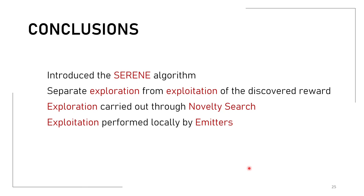In this paper, we introduced SERENE, which can efficiently perform exploration and exploitation of sparse rewards by separating the exploration from the exploitation step. This is done through a scheduler, with exploration performed through Novelty Search and exploitation performed through emitters. As future work, we would like to test different kinds of emitters, as many reward-based algorithms can serve this role. We also believe the scheduler can be improved to be more intelligent and further optimize the search process.